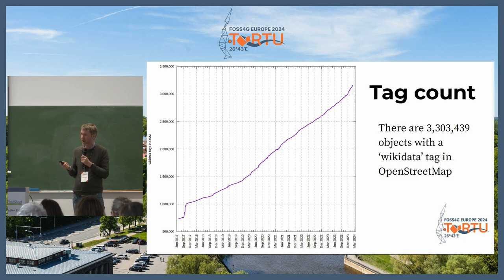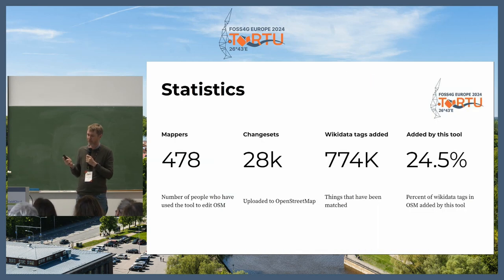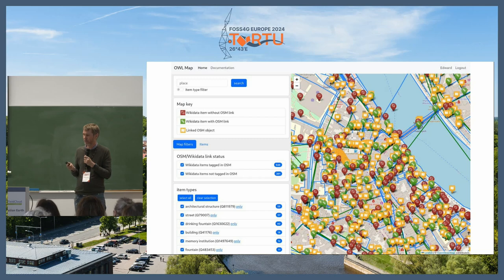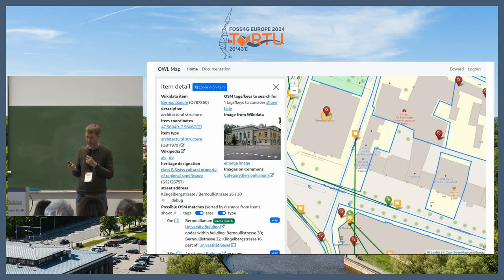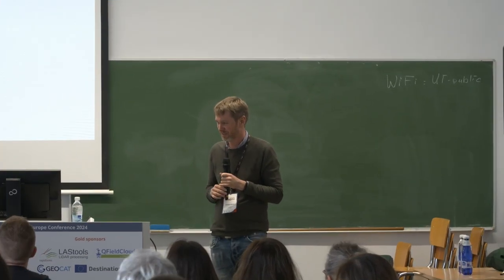People are using the tool. There are now over 3 million Wikidata tags in OpenStreetMap, and I've got almost 500 users. About 25% of the Wikidata tags in OpenStreetMap were added using my software. I've got a new version I'm working on — this will load faster and show you a big map. You zoom in, see some pins, click on pins and start linking things straight away. Here's an example of what the new version is going to look like: a big map with more data.